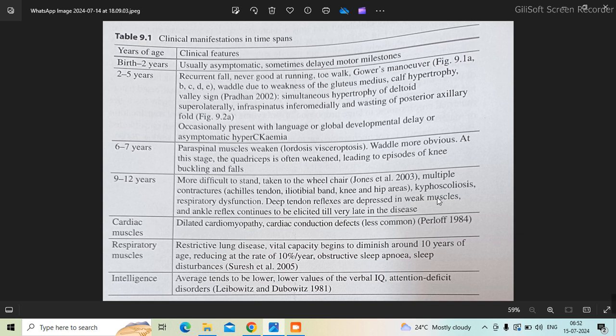On history, the points to be asked include: history of recurrent falls, toe walking, waddling, Gower's maneuver, and how was the running. From six to seven years, other muscles start getting involved.